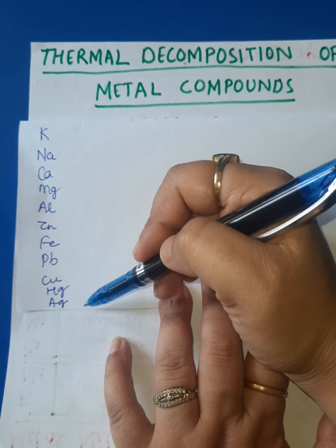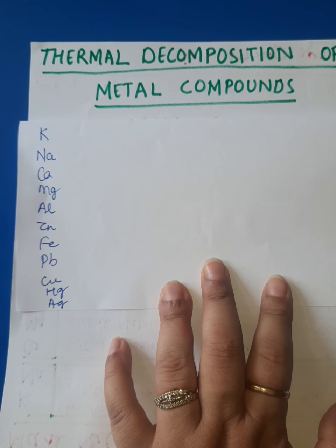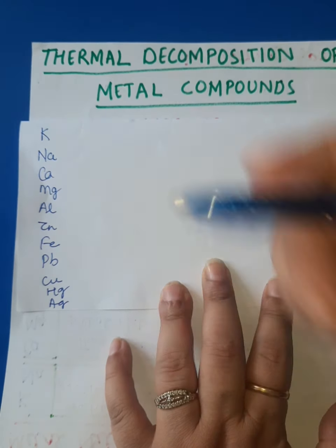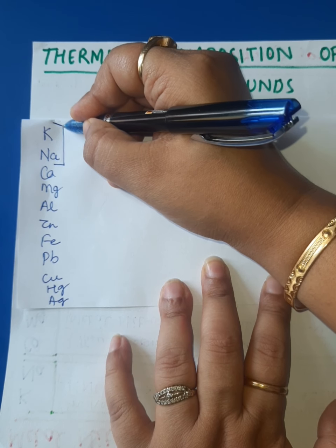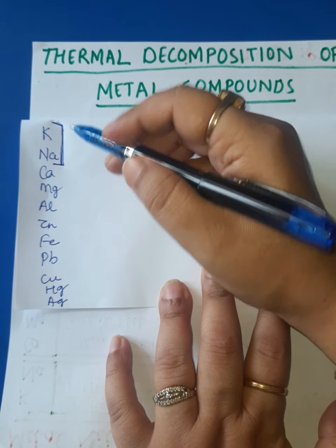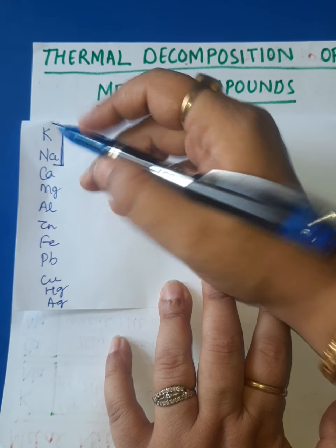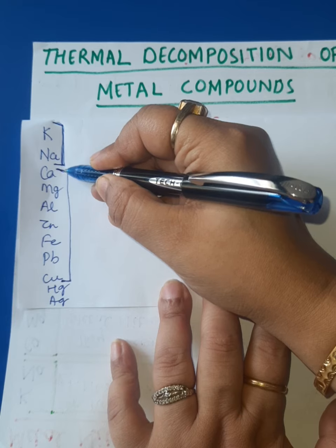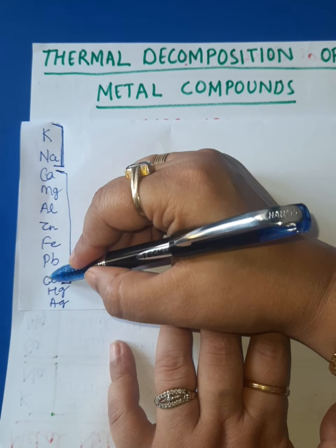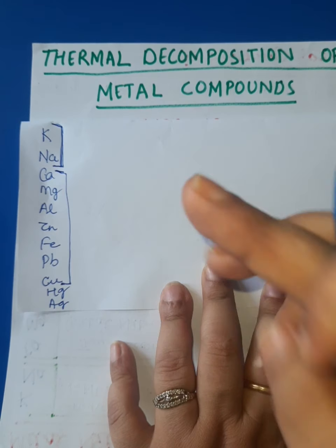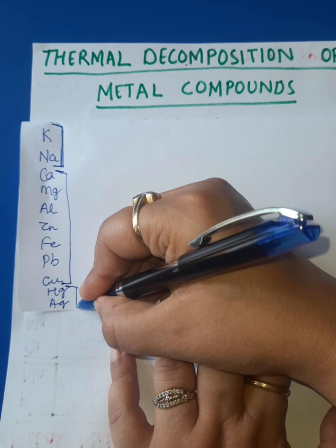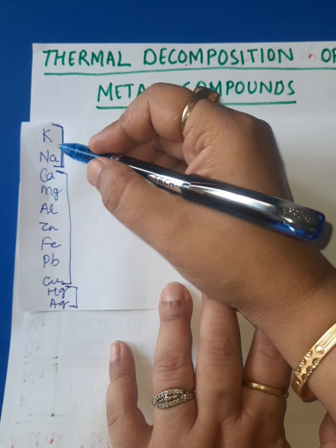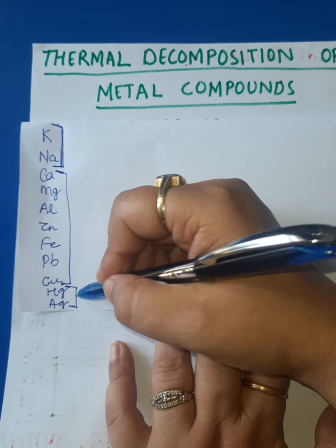Learn this activity series first. Then the second and most important trick: we divide this activity series into three categories. The first category comprises potassium and sodium. The second category is from calcium to copper — remember it as C to C. The third category is the last two: mercury and silver. Whenever you study thermal decomposition, always divide the activity series into these three categories.